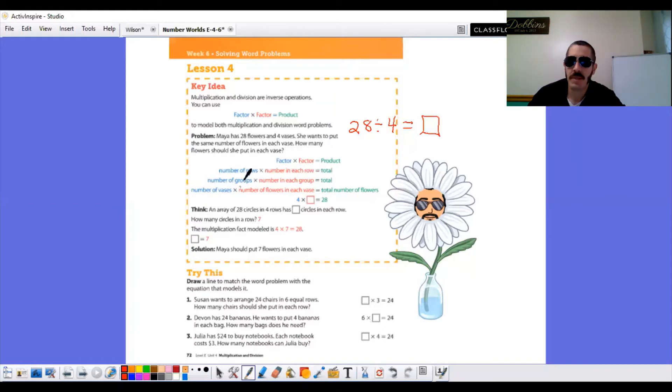In this problem, the number of groups is our number of bases, which we know is four. You go back into the word problem to find that. It's four times the number of flowers in each base. That's the thing that we don't know equals the total number of flowers. That was our first piece of information they gave us. 28. So they rewrite that as four times unknown number equals 28. Think an array of 28 circles and four rows has how many circles in each row? How many circles in each row? Well, they're asking us, what is this blank? Four times what gets you 28?